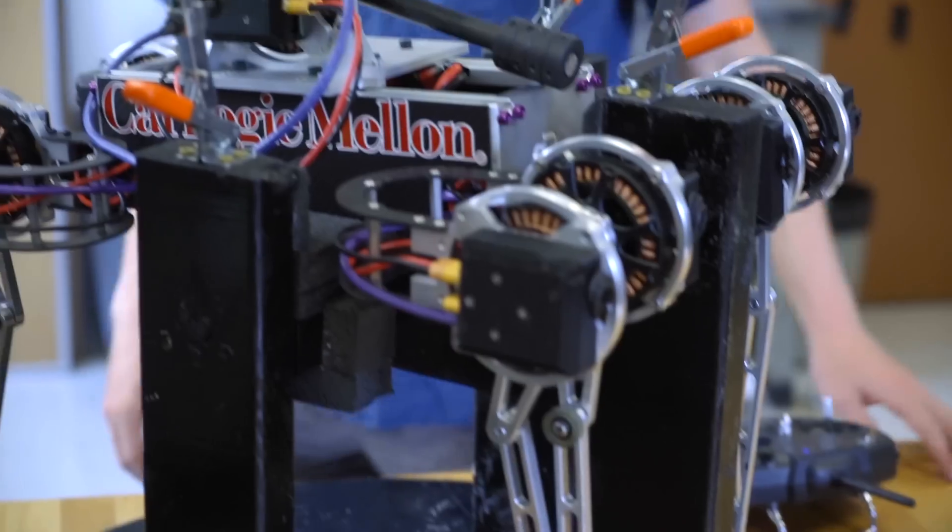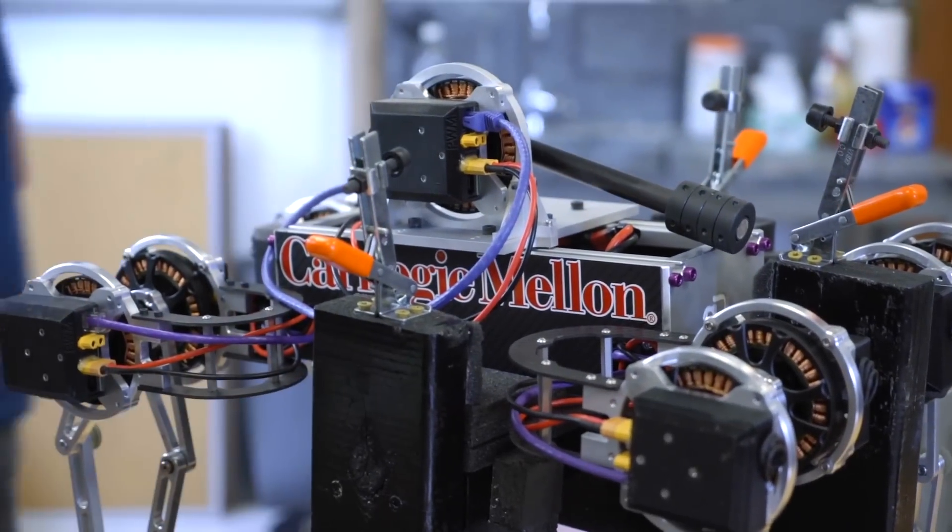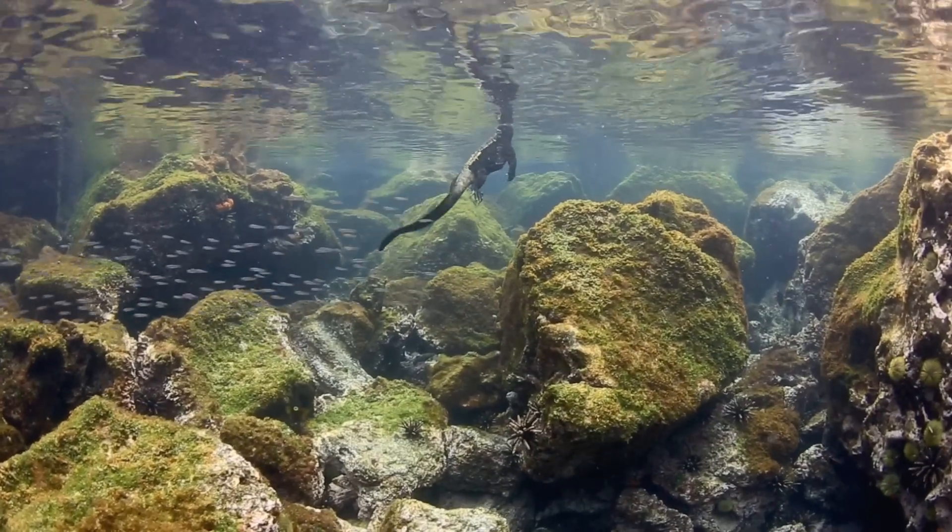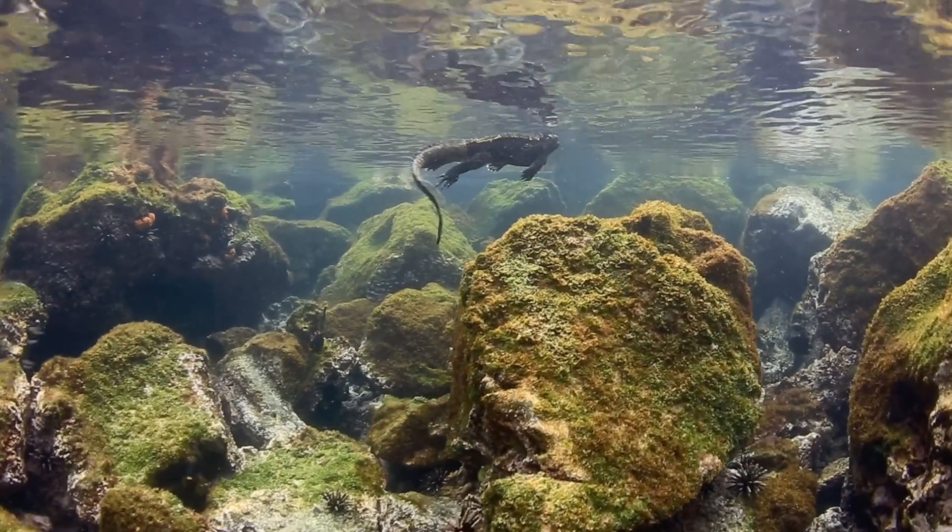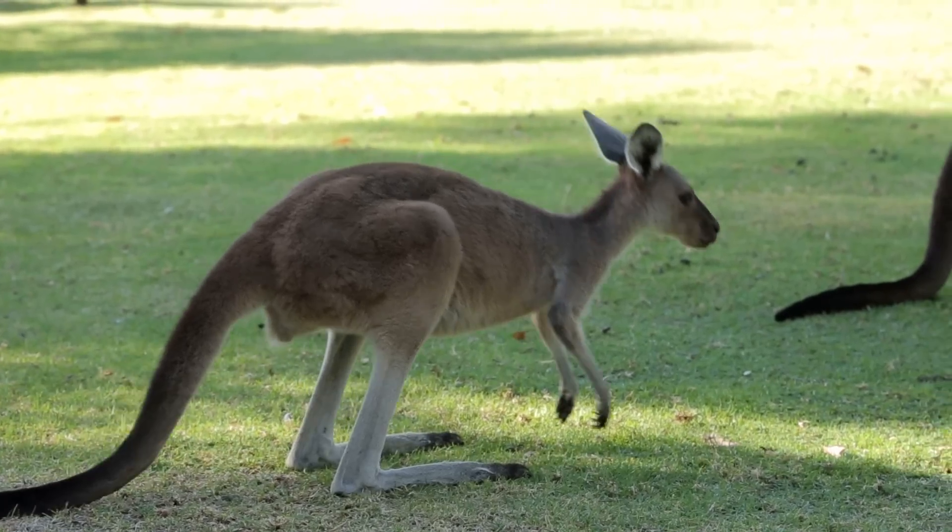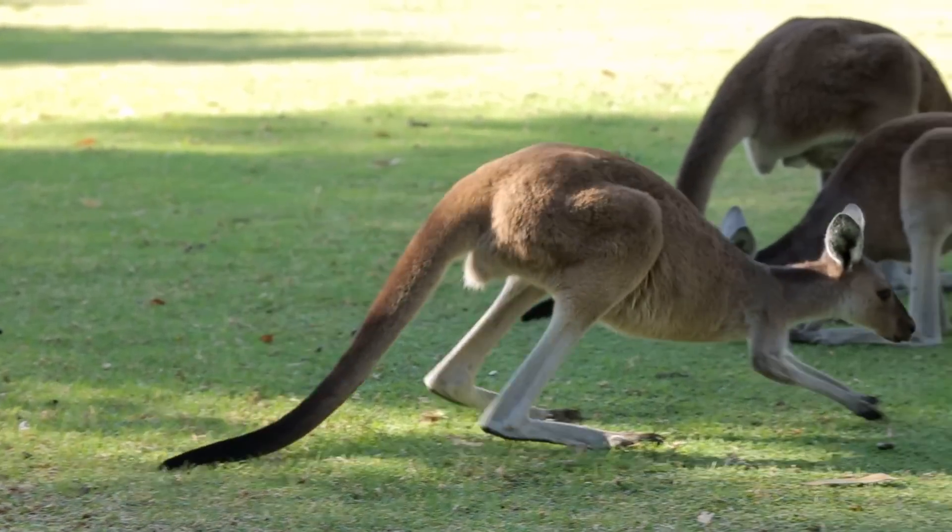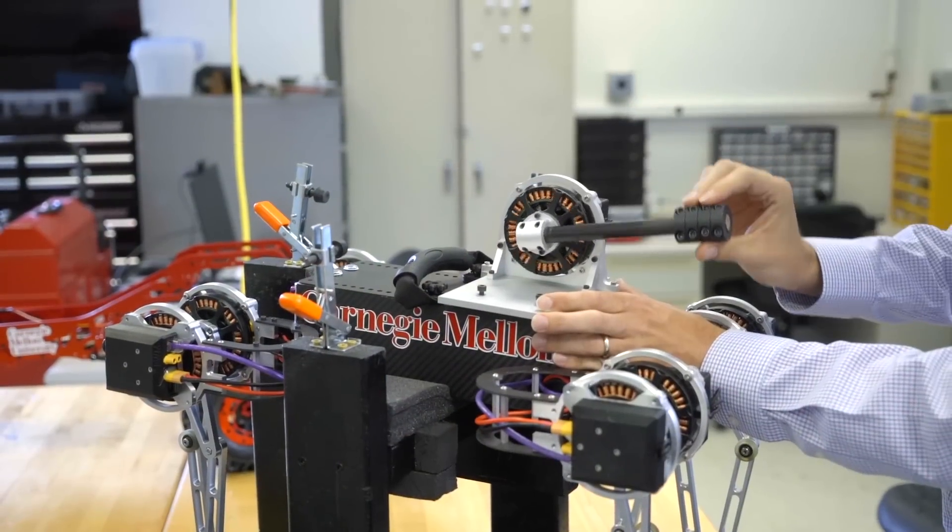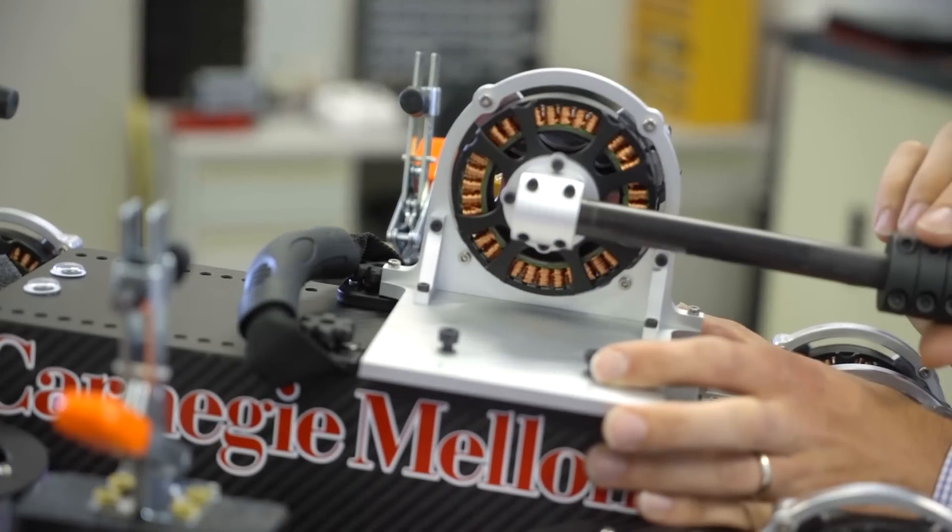One of the projects in my lab is looking at tails, and animals use tails for all sorts of different applications, and they seem to get a lot of benefit out of those tails. We're interested in looking at the different types of tails that are used in biology and how we can get robots to get the same benefit that those animals are getting.